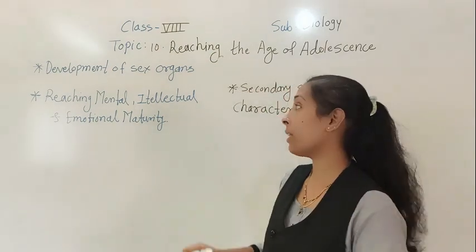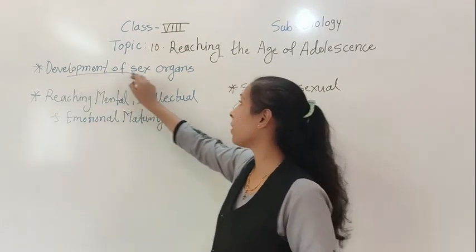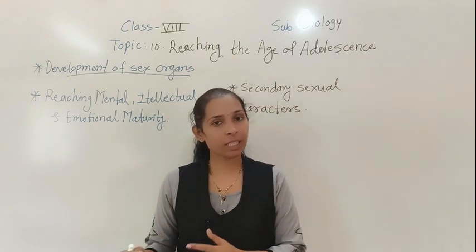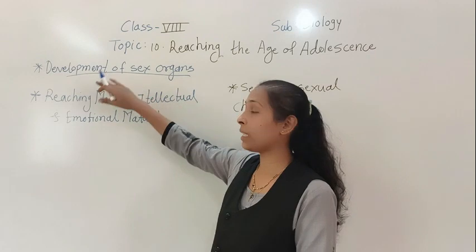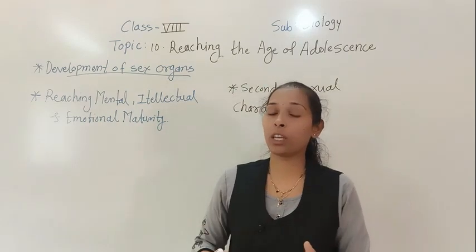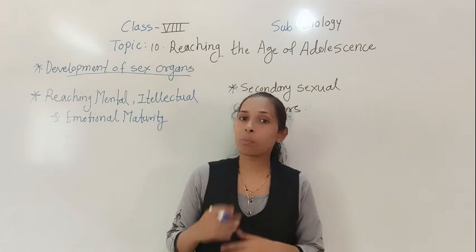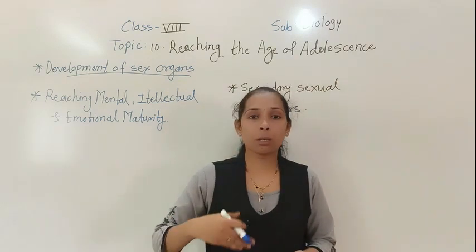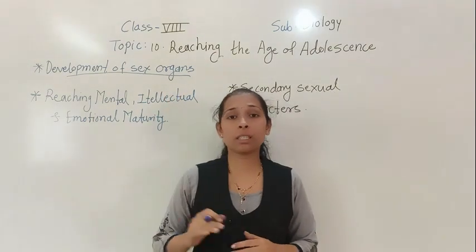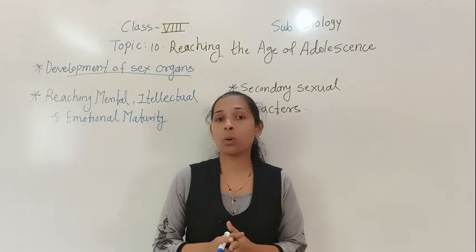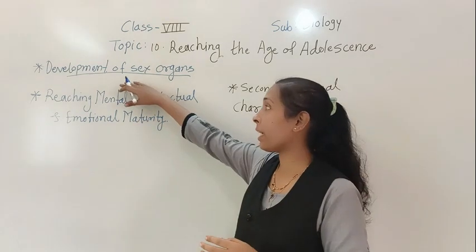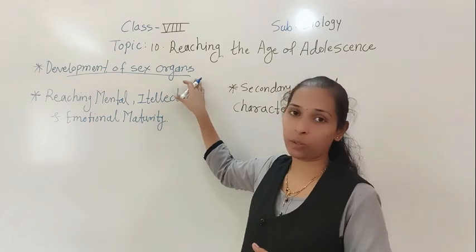Now we will move to the next change at puberty — that is development of sex organs. We have discussed about the male and female reproductive system in our previous lesson. At the age of puberty, development of sex organs starts to happen. In boys, the testes and penis get developed, and they start to produce sperms. In girls, the sex organs — the ovaries — start to mature and produce the sex gamete, which is the egg or ova.